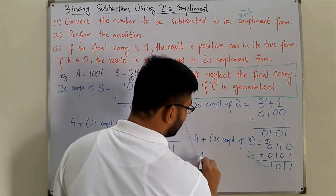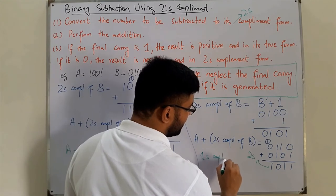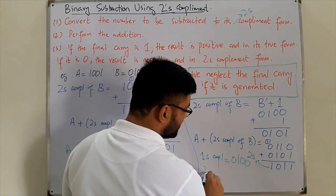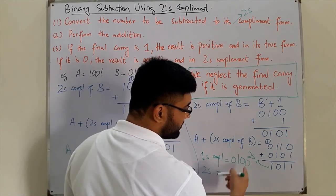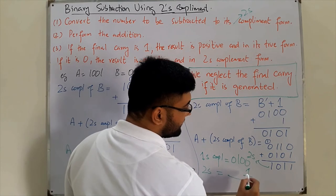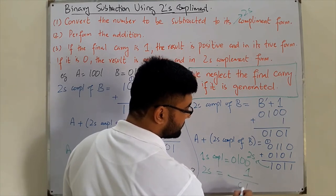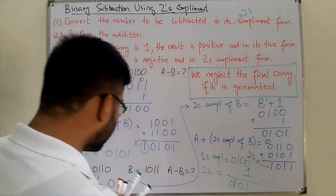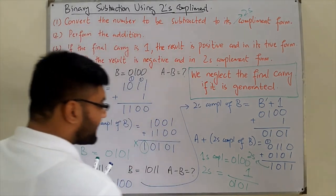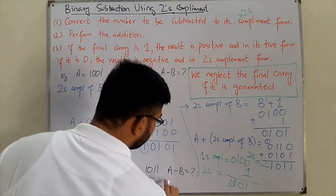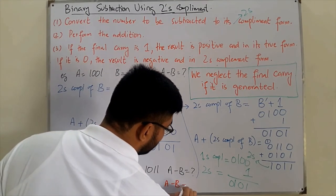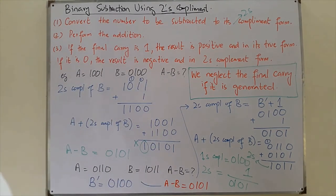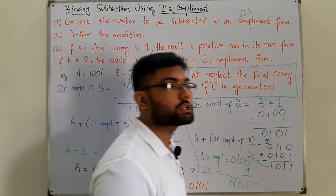We need to find the two's complement of this result to get the true value. The one's complement, by inverting the bits, is 0100. Adding one: the twos complement gives us 0101. So A minus B in this second question comes out to be 0101 (negative). That's all about binary subtraction using two's complement.